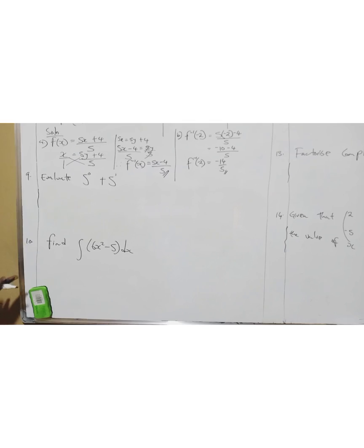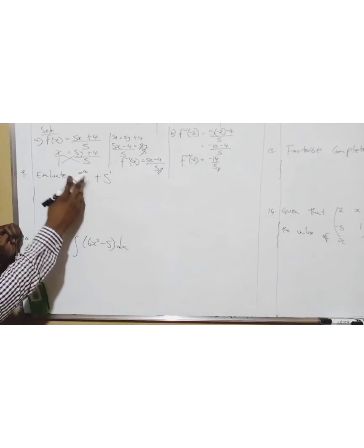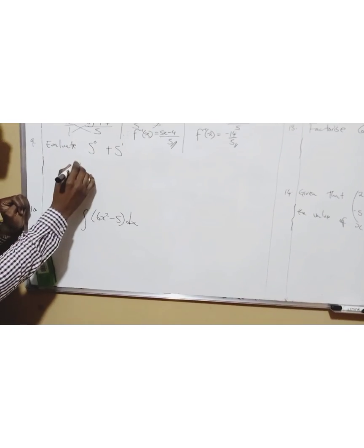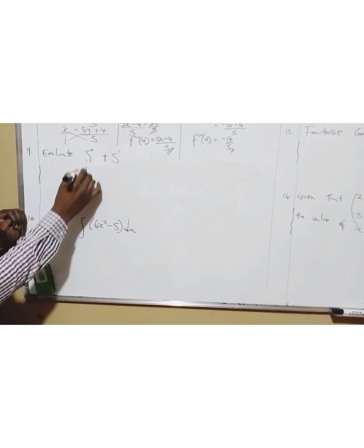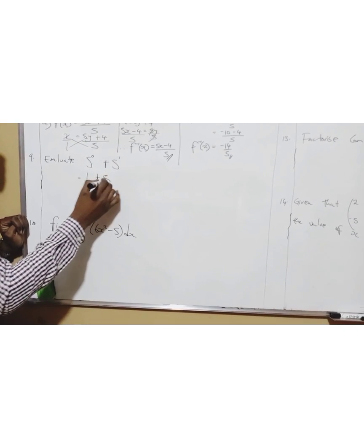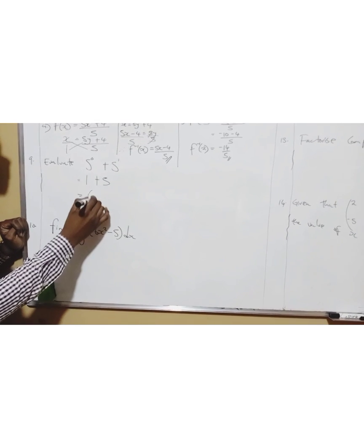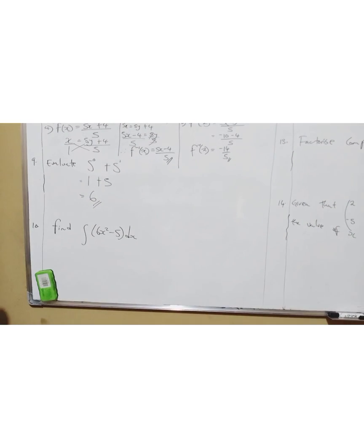Question nine: evaluate 5 to the power 0 plus 5 to the power 1. Any number to the power zero is 1. 1 plus 5 to the power 1 is 5. 1 plus 5 is 6.